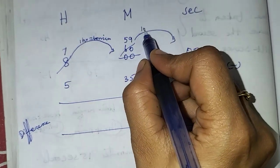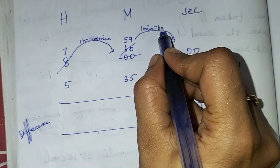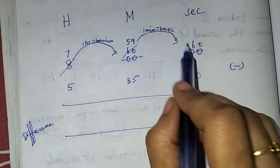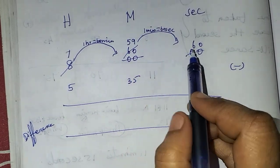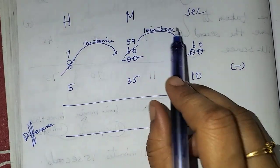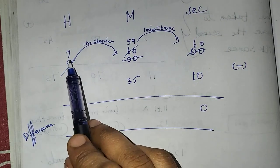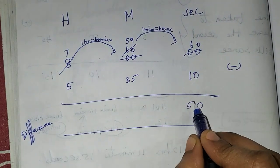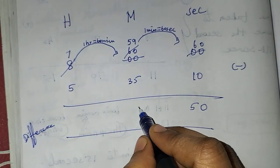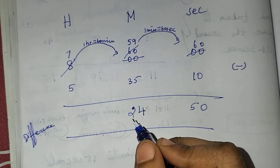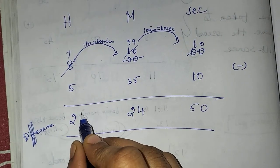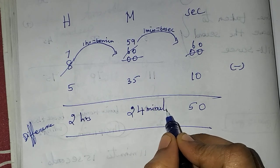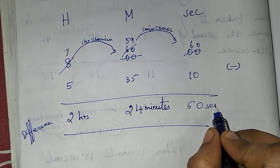This gives us 60 seconds. With 60 plus the existing seconds, we get 50 seconds after subtracting. Then: 9 minus 5 is 4, 5 minus 3 is 2, 7 minus 5 is 2. So the answer is 2 hours, 24 minutes, and 50 seconds.